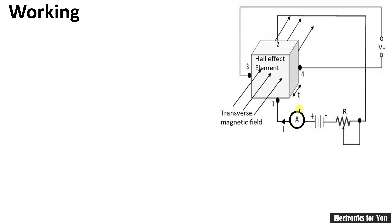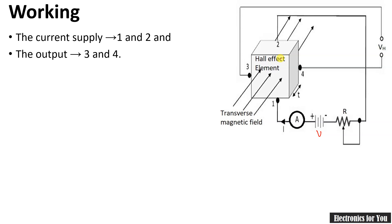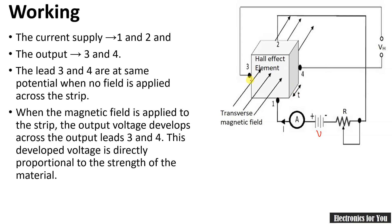Now let us see the working of the Hall Effect transducer. Terminals one and two are used for the application of supply voltage, and the output is taken from terminals three and four. A transverse magnetic field is applied in a perpendicular direction to the EMF. In normal cases we get zero output voltage, whereas when some magnetic field is applied we get a non-zero output voltage V_H, known as the Hall Effect voltage. It is given by the formula: V_H = K_H × I × B / t.